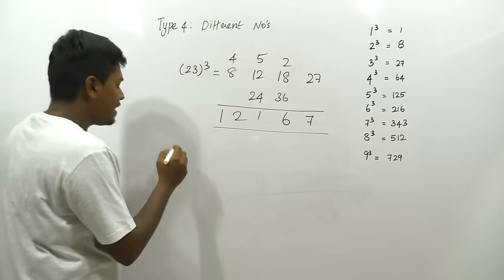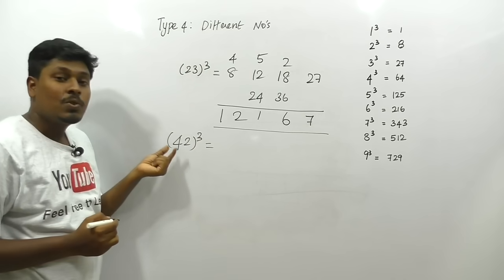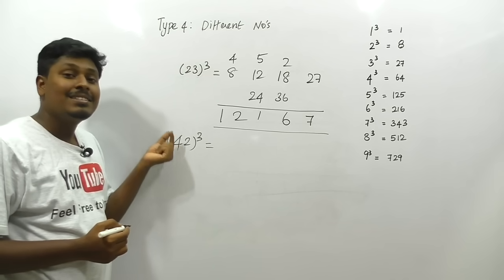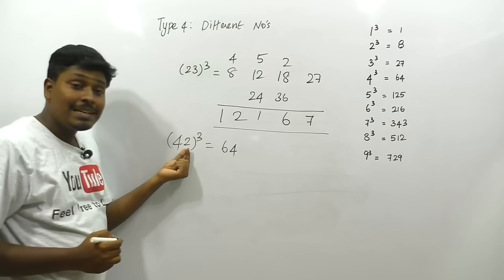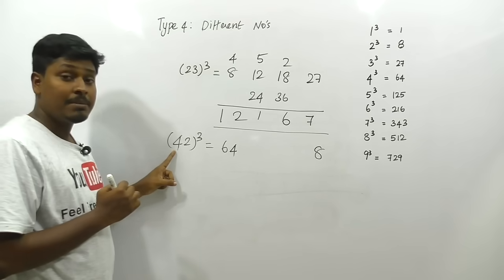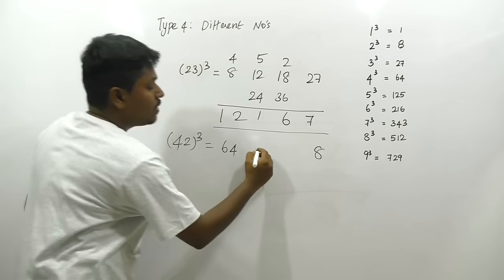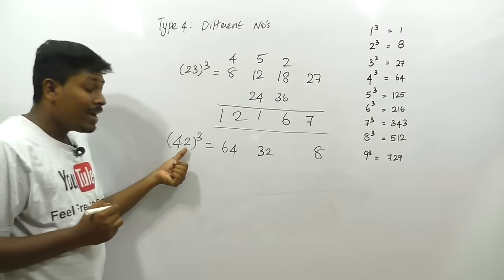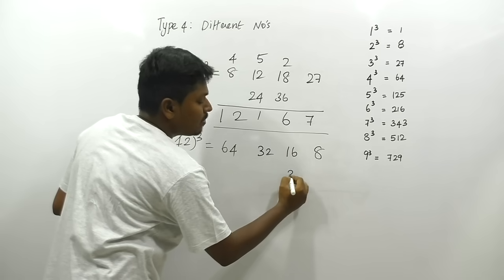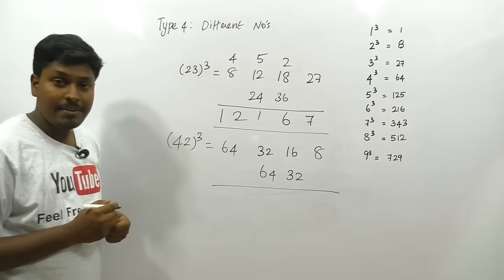For 42³ (Type 4): cube the first digit: 4³ = 64; cube the last digit: 2³ = 8. Square the first and multiply by second: 4² × 2 = 32. Square the second and multiply by first: 2² × 4 = 16. Double the center numbers: double 32 = 64, double 16 = 32. Then add all numbers following the same carry procedure to get 42³ = 74088.